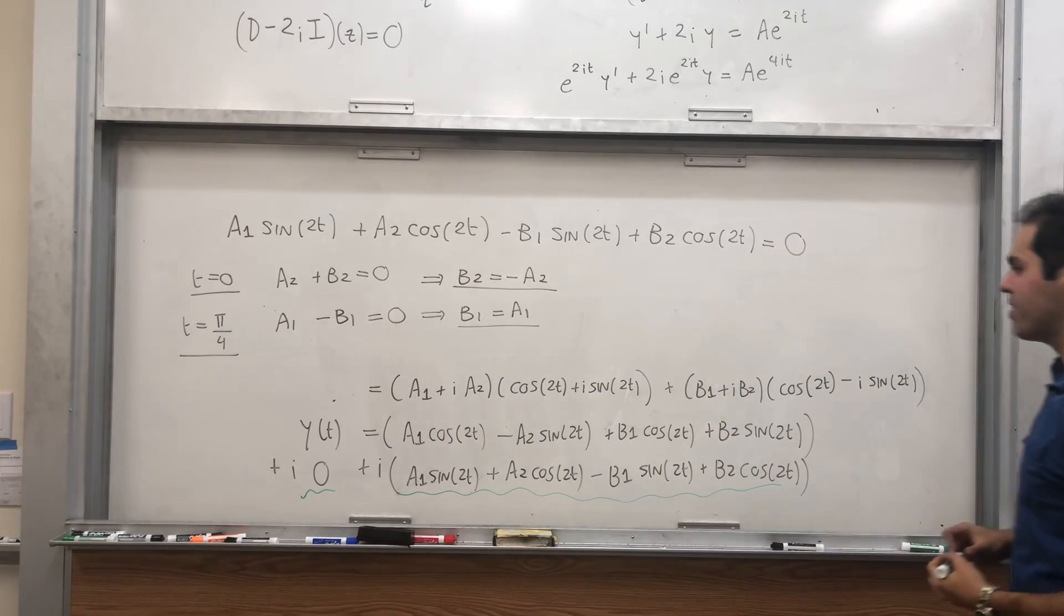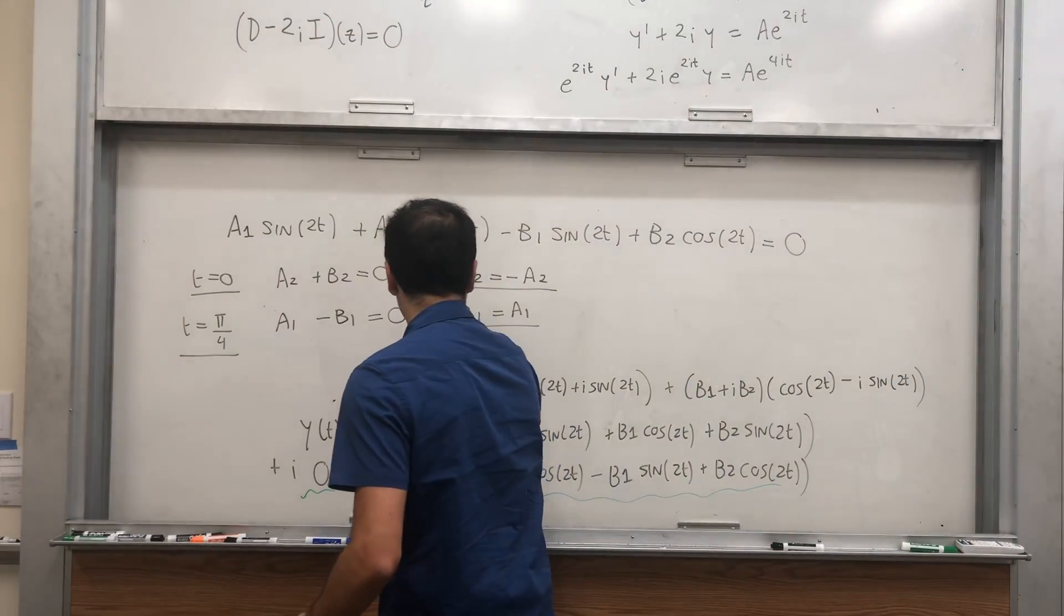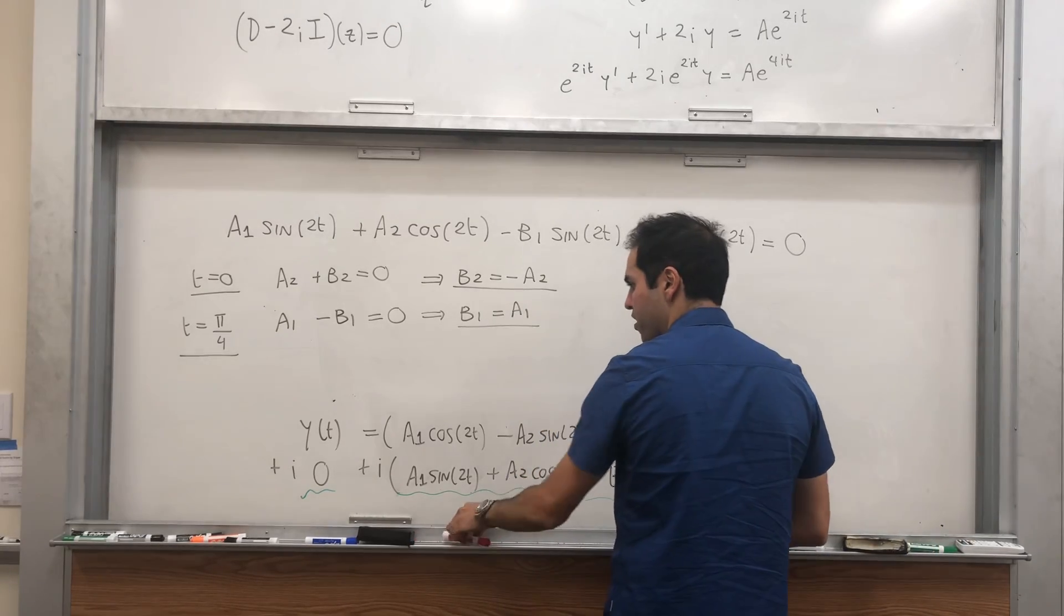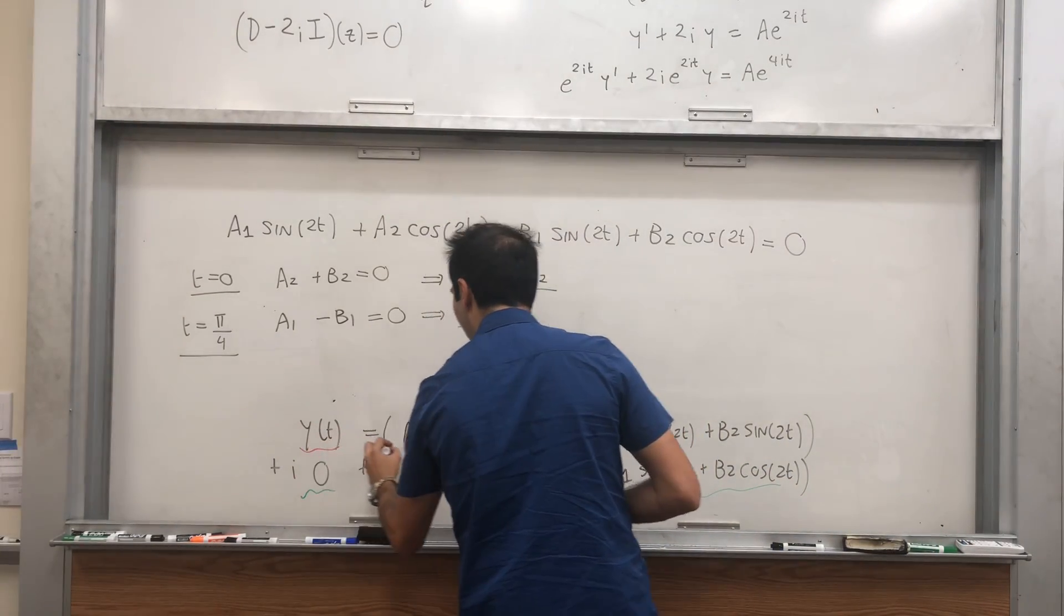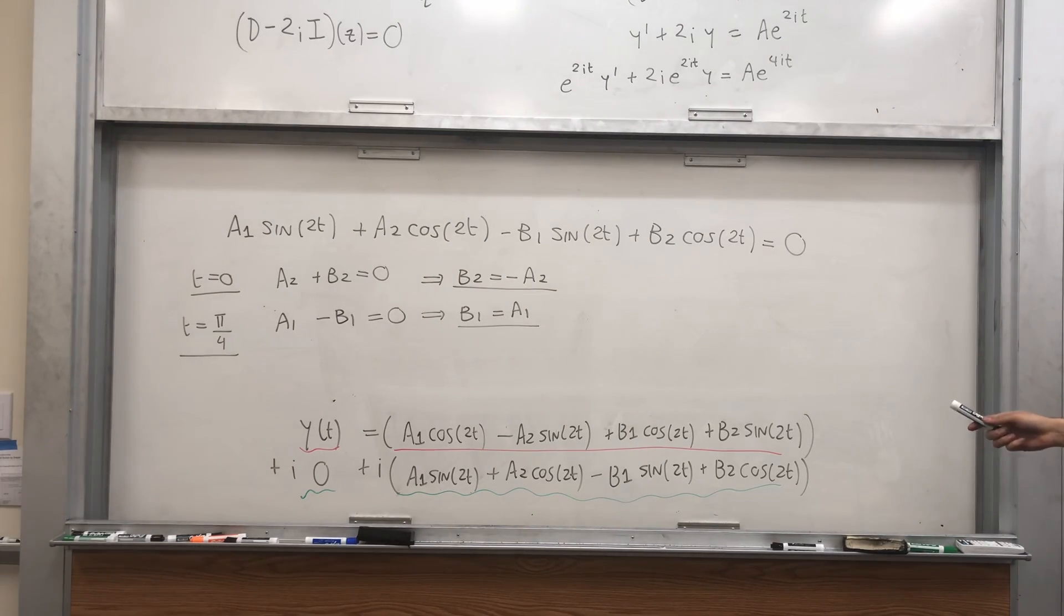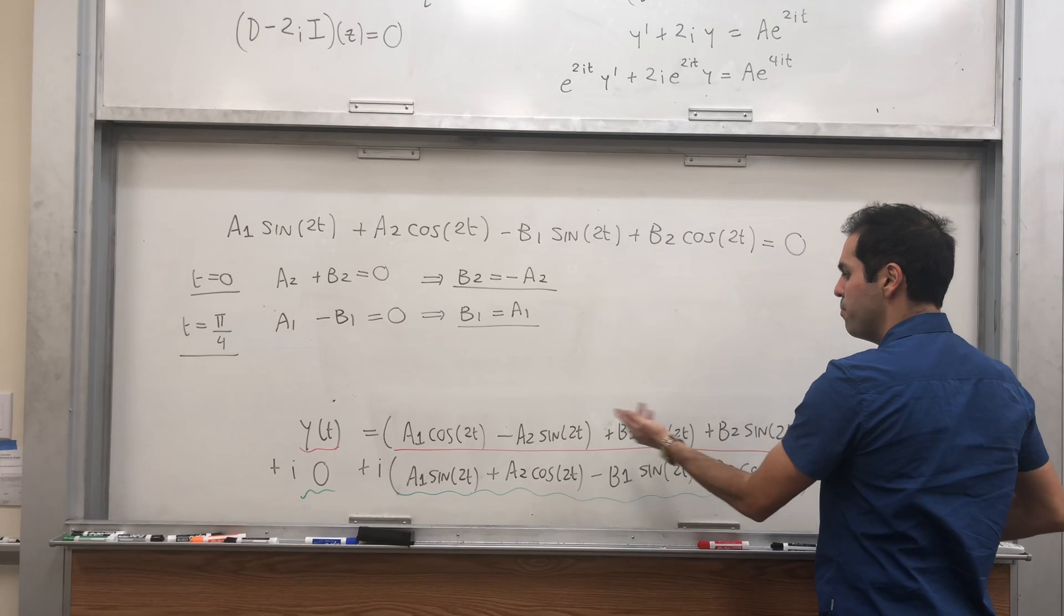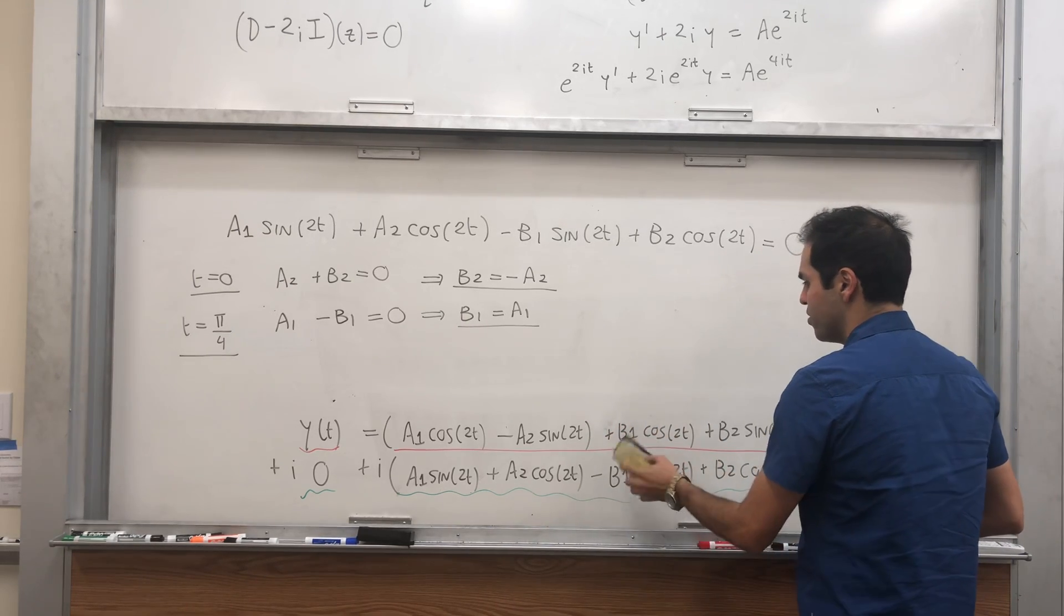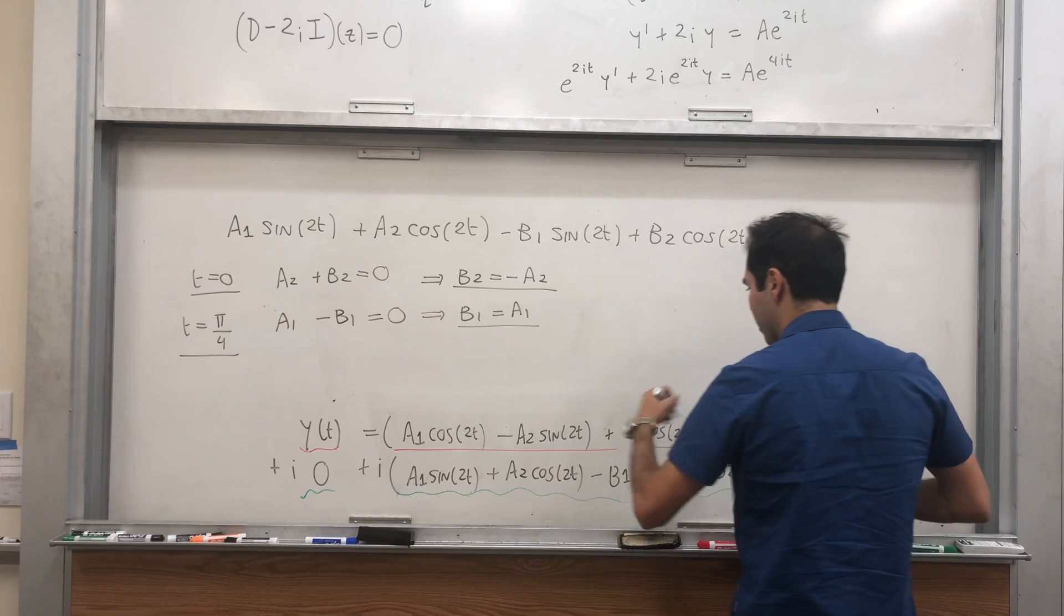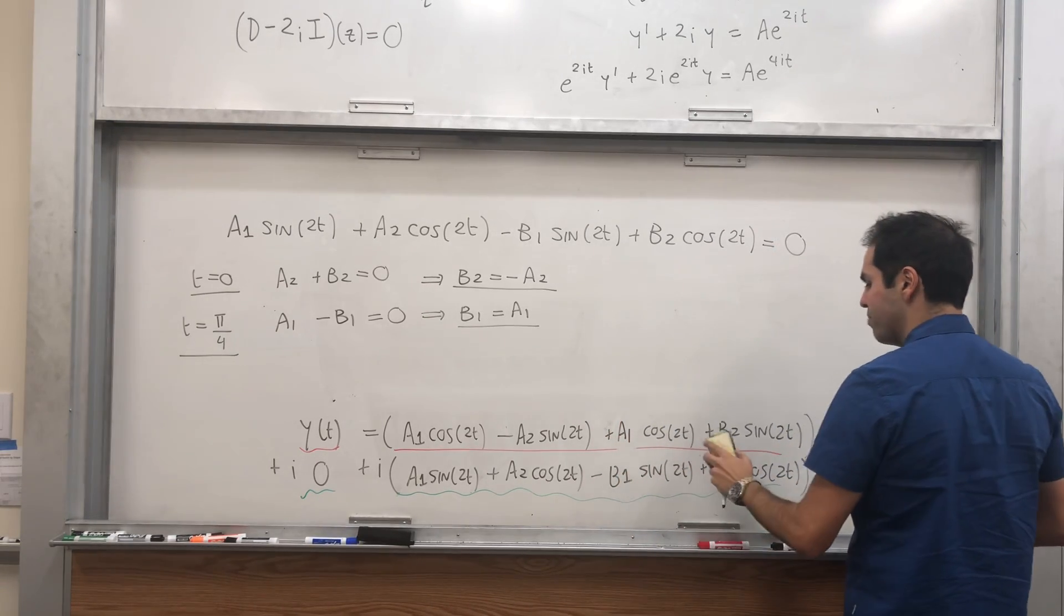Why is that important? Because remember, we still have our real solution. So now, if you compare real parts with real parts, you get y equals this whole mess, but remember, we had all our identities here. So b1 is a1, and b2 is minus a2. So we can just replace this,